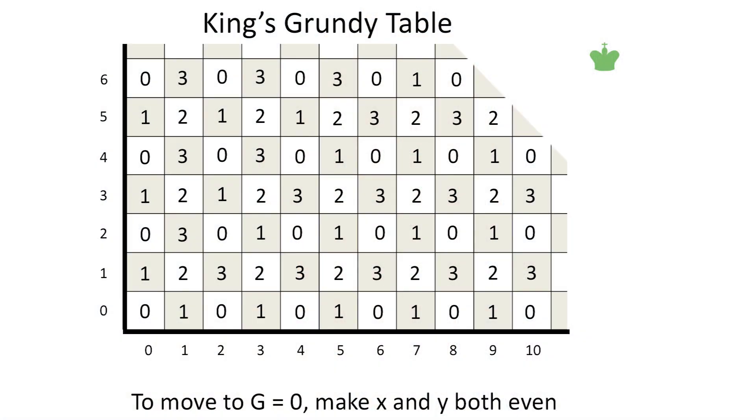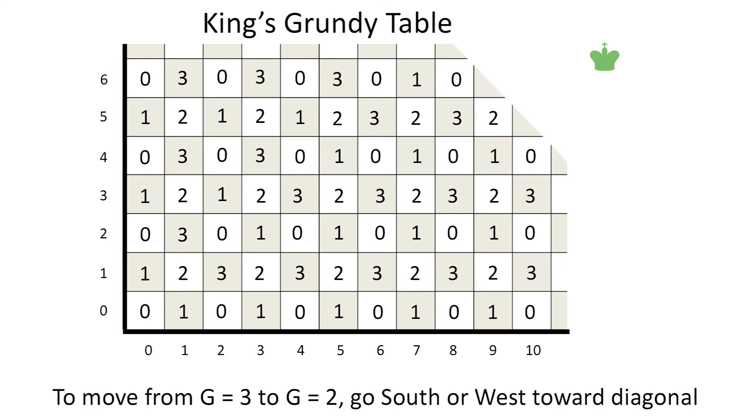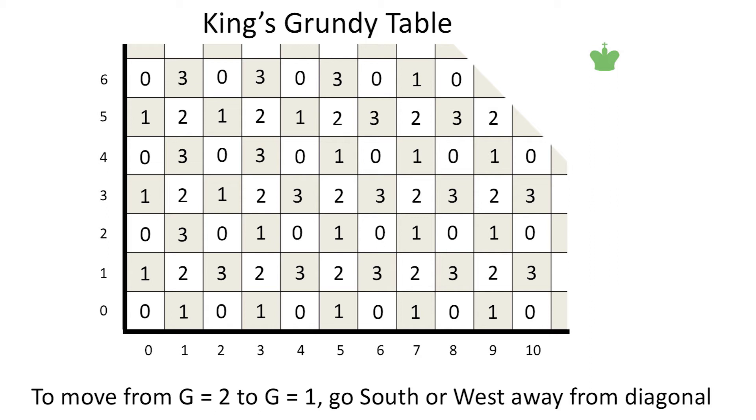Yet another way of summarizing the king's Grundy table is to associate the direction of the move with the change in the Grundy number. To change 1 to 0 or 3 to 2, move south or west as needed toward the diagonal. To change 2 to 0 or 3 to 1, move southwest. To change 3 to 0 or 2 to 1, move west or south, whichever is away from the diagonal.